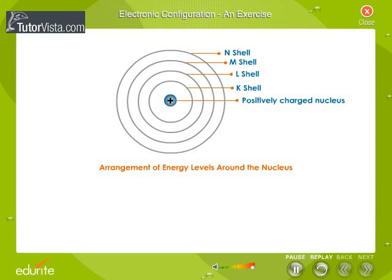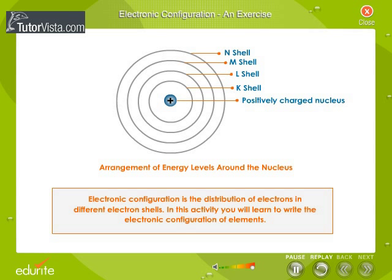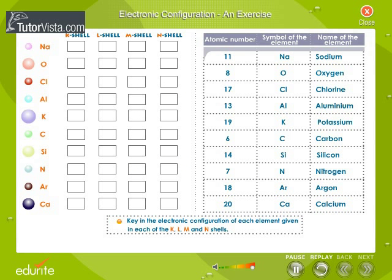Electronic configuration is the distribution of electrons in different electron shells. In this activity, you will learn to write the electronic configuration of elements. Here are ten elements listed with their symbols and atomic numbers. Against each atom, key in the number of electrons present in the various electron shells.